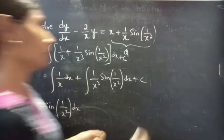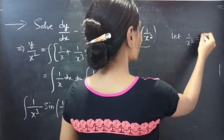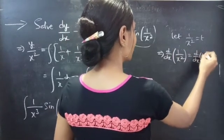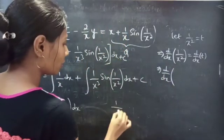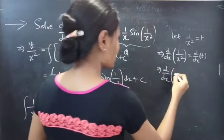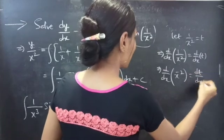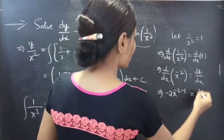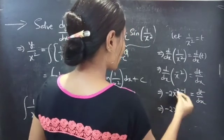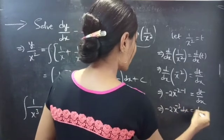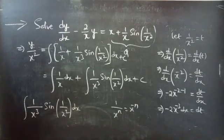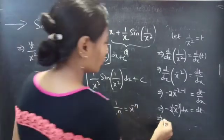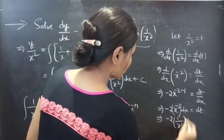Now consider the integral of (1/x³)·sine(1/x²) dx. Let t equal 1/x². Differentiating both sides with respect to x: since 1/x² equals x^(minus 2), the derivative is minus 2·x^(minus 3), so minus 2·x^(minus 3) dx equals dt, which gives minus 2·(1/x³) dx equals dt.